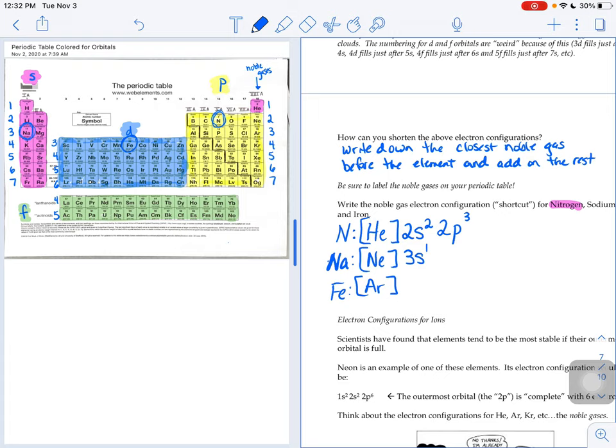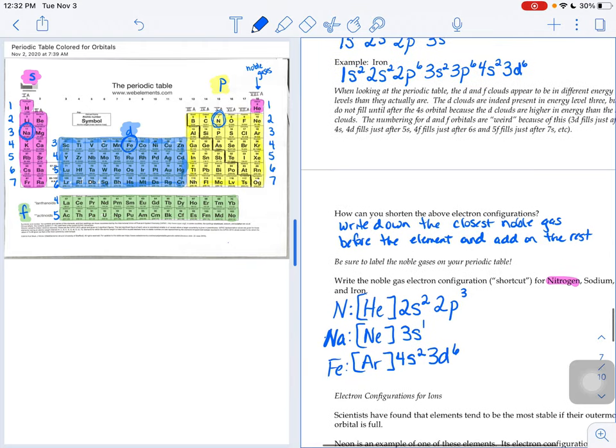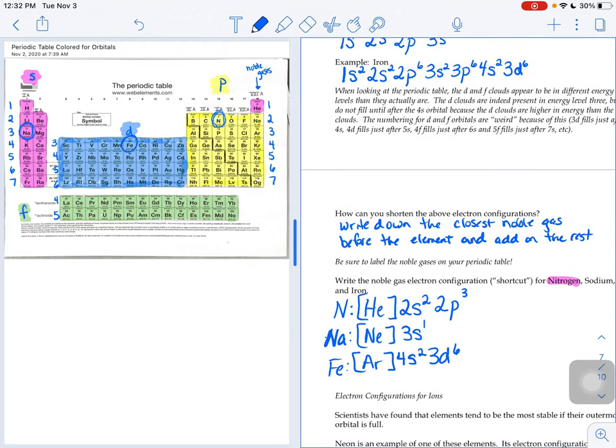So we're starting at argon number 18. If we're at number 18, the next seat we're going to fill is number 19 and 20. So that's the 4S section. We would take both seats in the 4S section. And then to get to iron, 3D6. That's much shorter than the original electron configuration for iron.